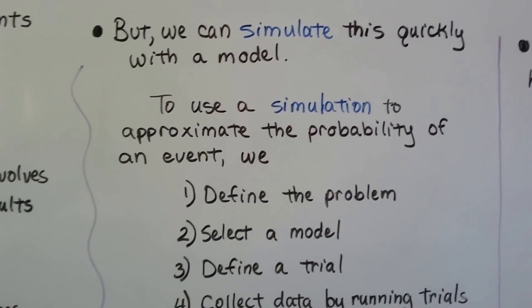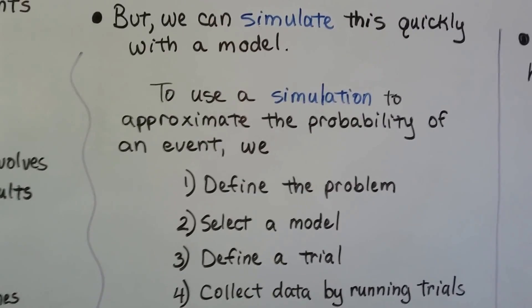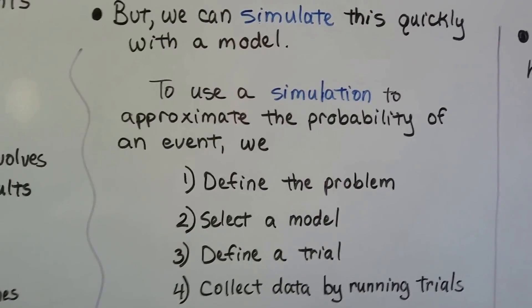To use a simulation to approximate the probability of an event, we define the problem, we select a model, we define a trial, and then collect data by running trials.